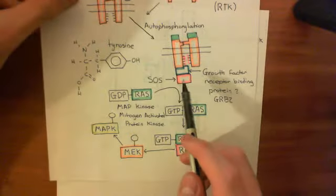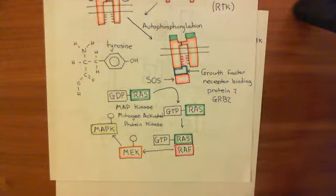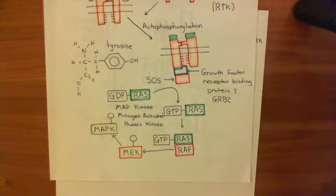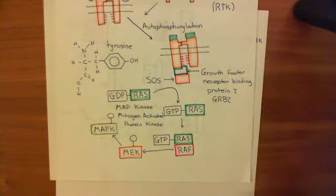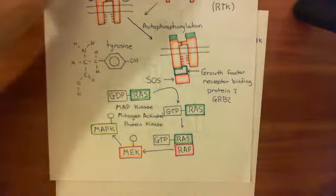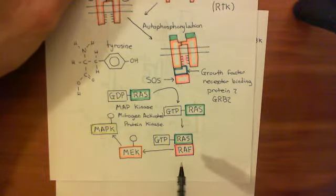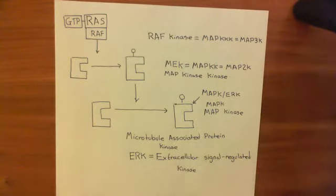SOS basically converts RAS-GDP into RAS-GTP. When SOS binds the growth factor receptor binding protein 2, it becomes an active G protein-activating enzyme, chopping off the GDP, finding a GTP from the cytoplasm, and binding that GTP onto RAS instead. RAS-GTP then binds with the RAS kinase, and the two of them together become an active kinase — RAS-GTP binding to the RAS kinase activates it.